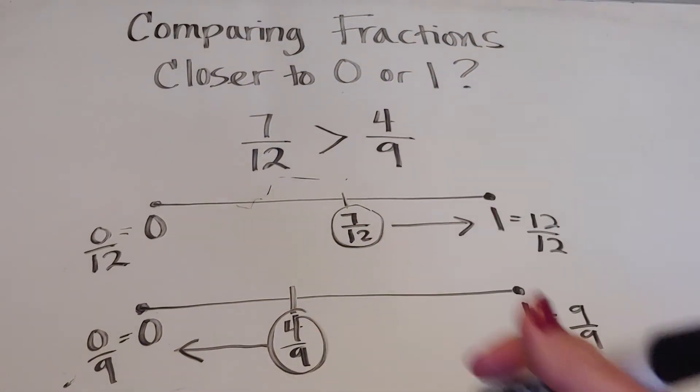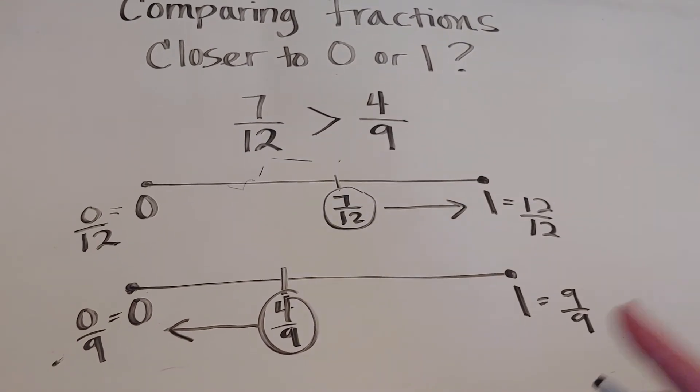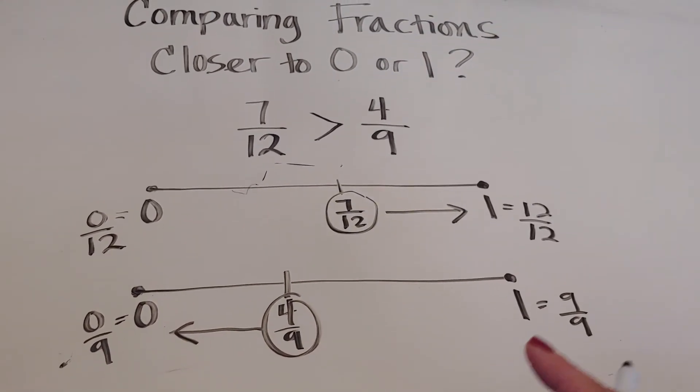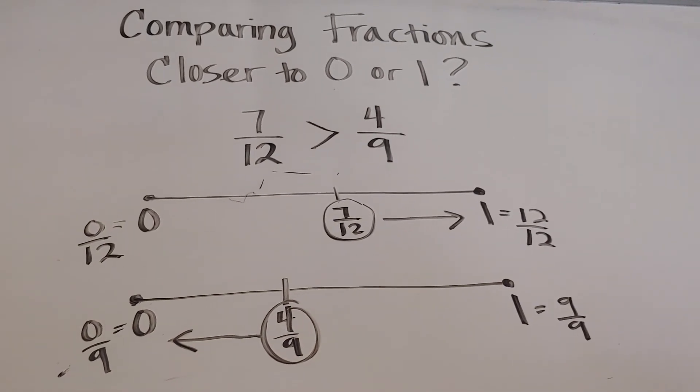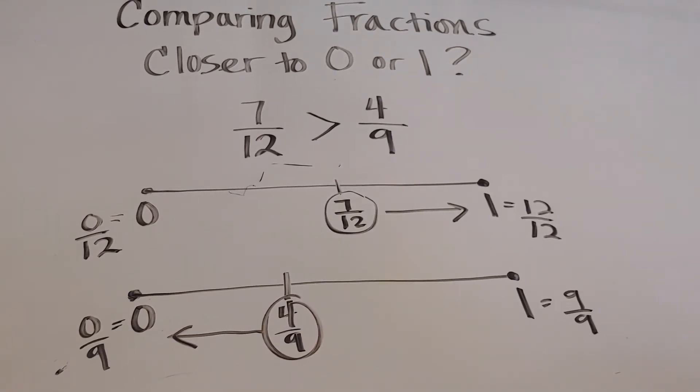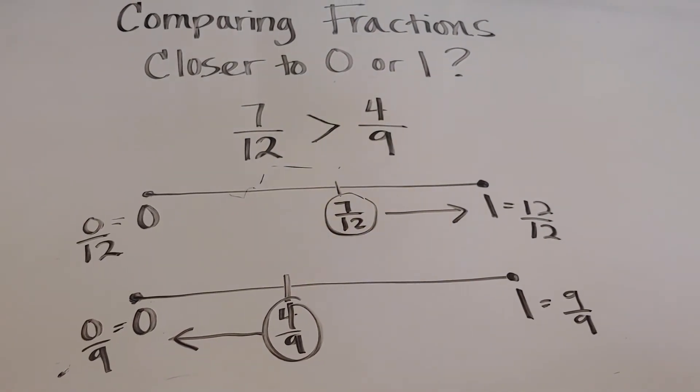Notice we were able to do this without making a common denominator. We will be making common denominators in the next couple sections, but right now we just want to get the idea of size comparison by using zero and one to balance it out.